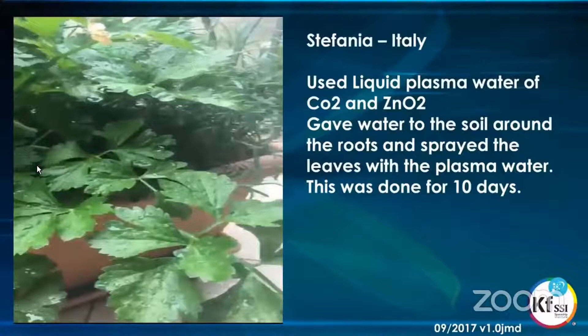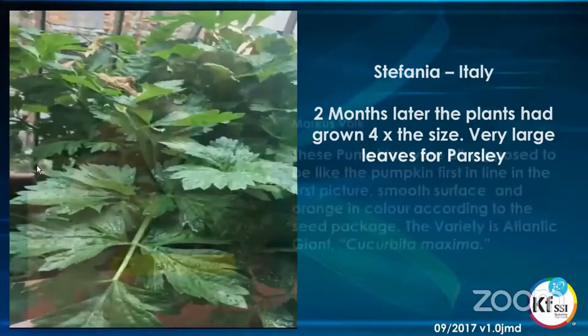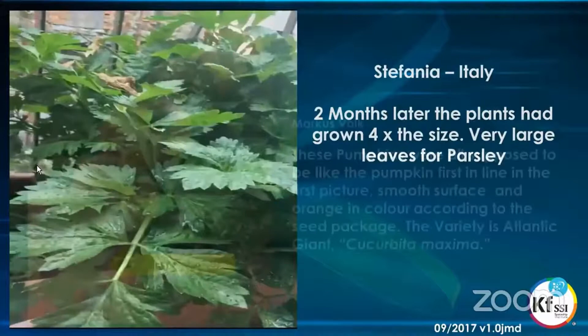Now we move to Italy. Stephanie grew parsley using liquid plasma water of CO2 and zinc oxide. She gave water to the soil around the roots and sprayed the leaves with the plasma water. This was done for 10 days. Then after 10 days she left, and when she came back two months later, the plants had grown four times the size before she left, with very large leaves. She was actually surprised — she thought that couldn't be parsley because of how beautiful it was. It was very healthy and very big — she thought it was too big for parsley. That shows the effects of those liquid plasmas.